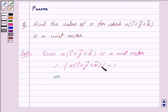The magnitude equals √(x²·1² + 1² + 1²), and this equals 1.